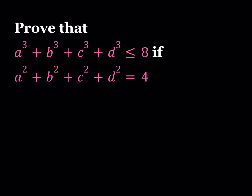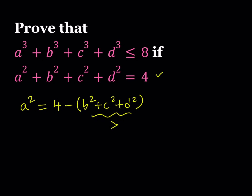Let's start with the given expression: the sum of the squares is equal to 4. I'm going to isolate one of the variables — it doesn't matter because of symmetry. Whatever I find out about a will be true for b, c, and d. So let's isolate a squared. We can write it as 4 minus the quantity b squared plus c squared plus d squared. Now, b squared plus c squared plus d squared is a sum of squares, and that can never be negative.